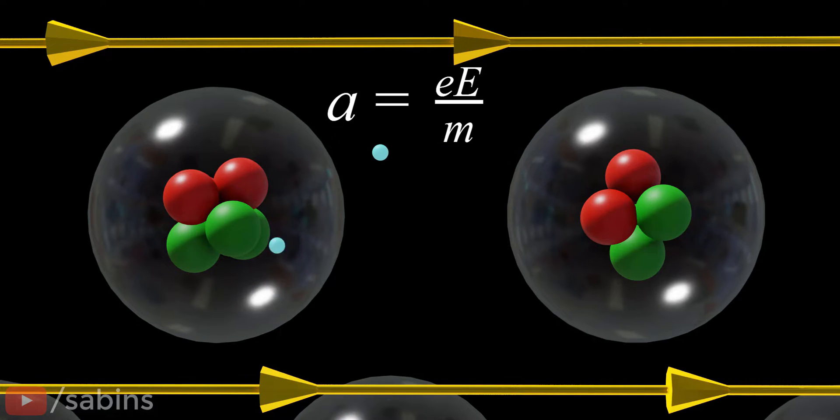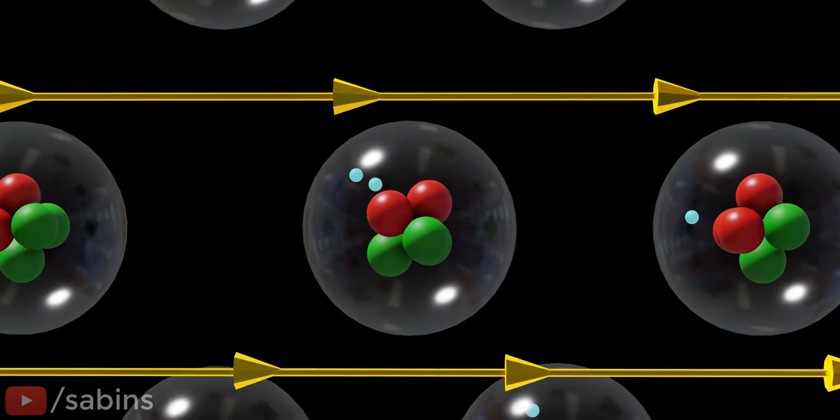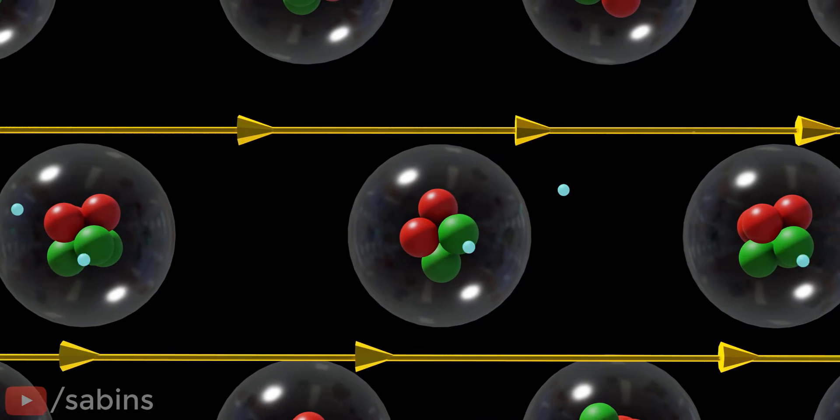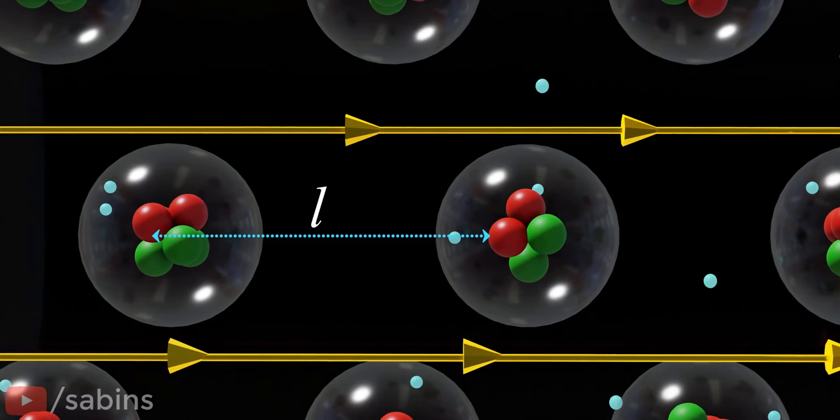However, very soon it will collide with a nucleus and its travel will come to a halt. Then it will accelerate and collide again. Let's assume the average length of this collision is L and the average time of the collision is T.